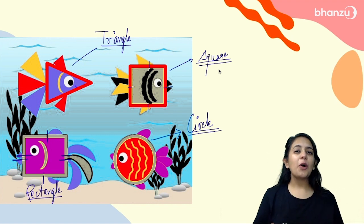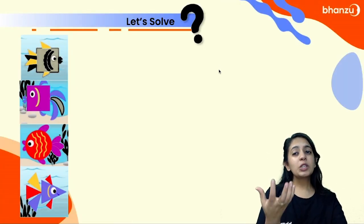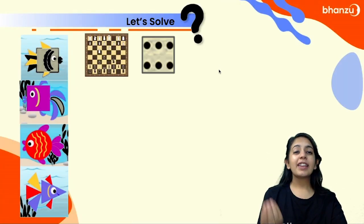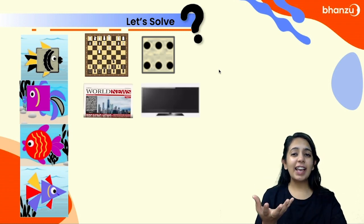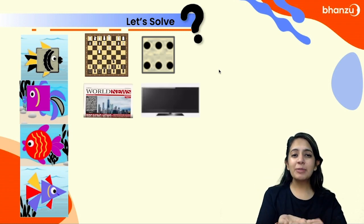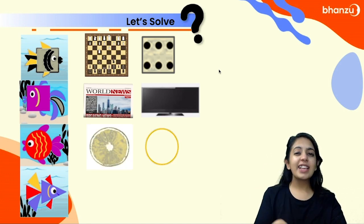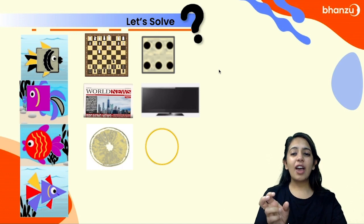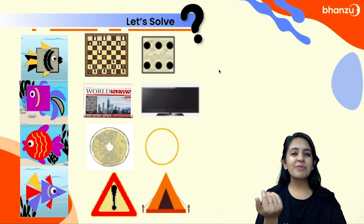Let's talk about their real life applications. A square can be seen in the chessboard and in the dice face. A rectangle can be seen in the form of a newspaper, the laptop screen, and TV screens. A circle can be seen in the lemon face and in a bangle. A triangle can be seen in the signboard, in the tent, and in Doritos chips.